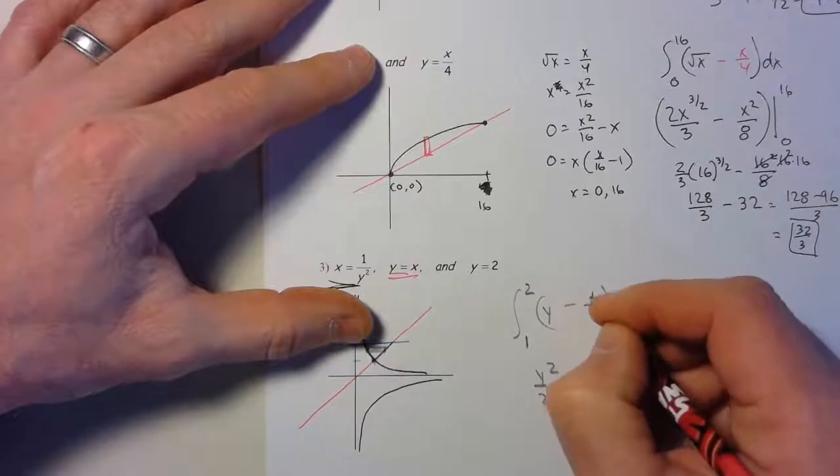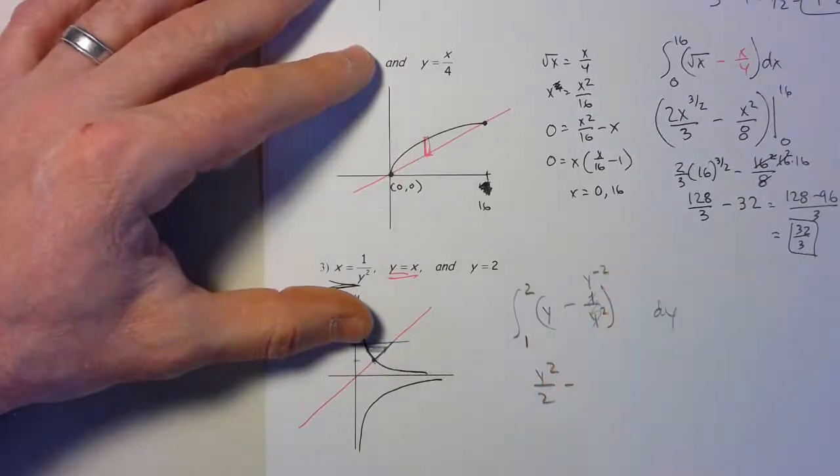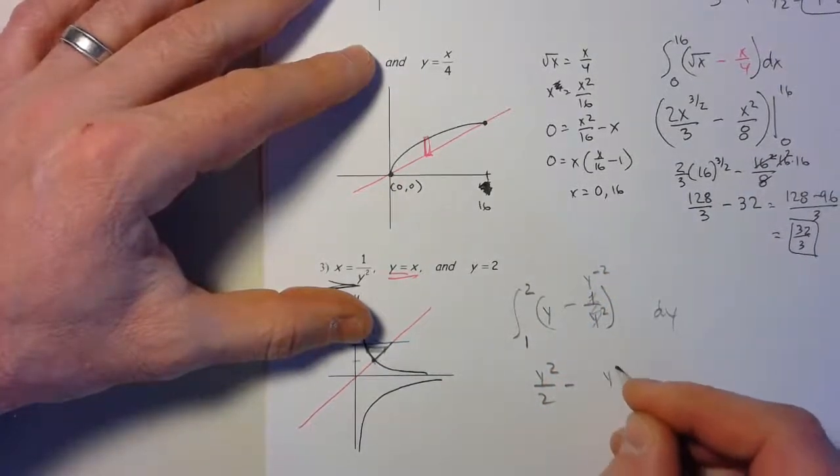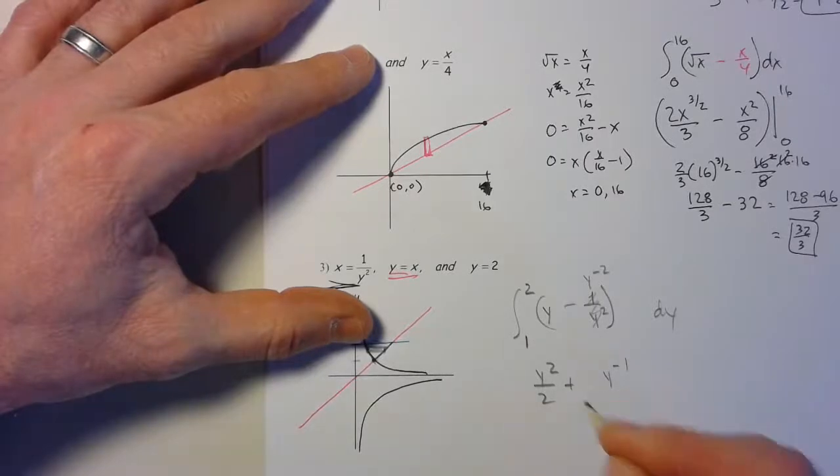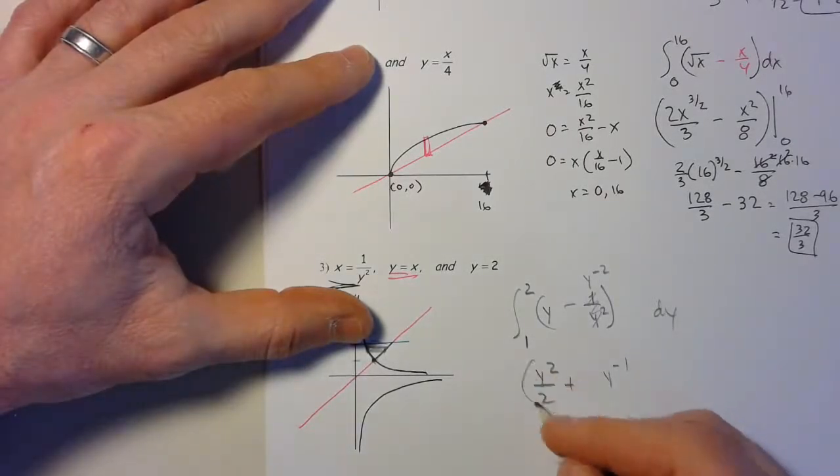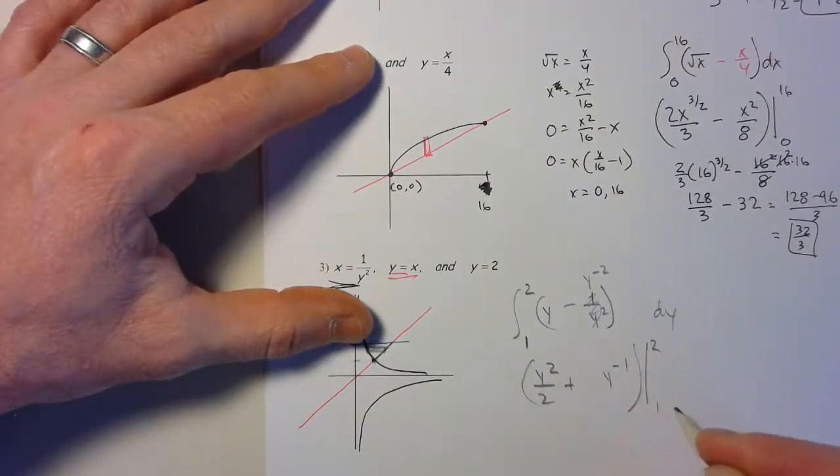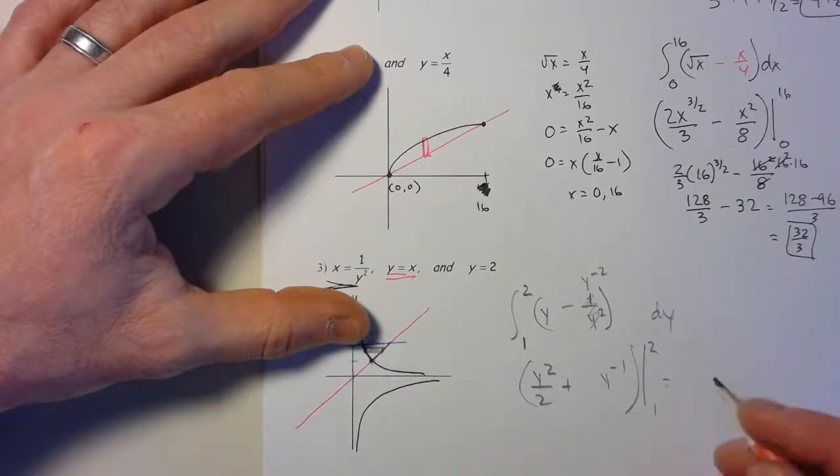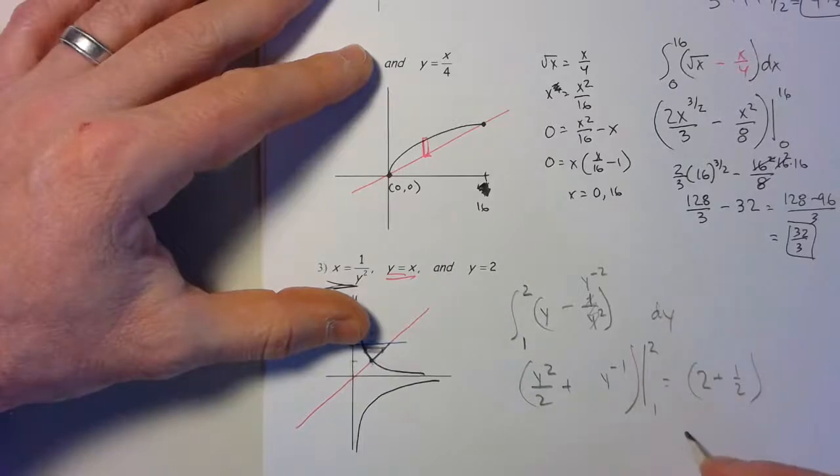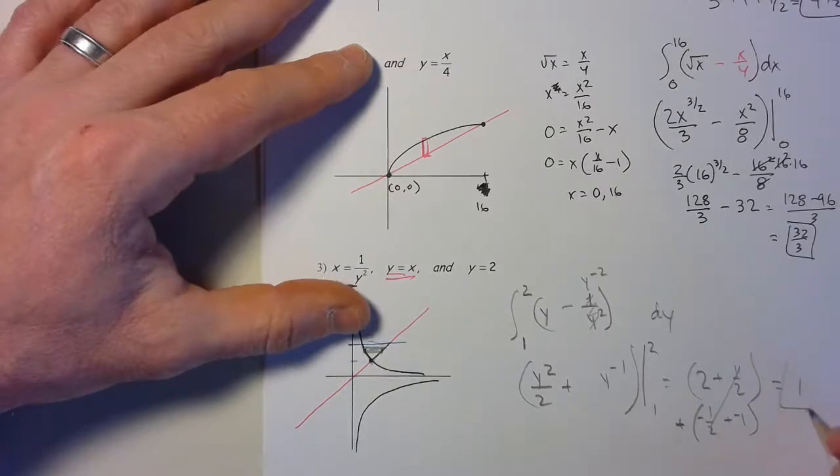Remember that this is y^(-2), so if I add 1 I get y^(-1). That's y²/2 - 1/y from 1/2 to 2. Plug it in: 2 + 1/2 minus 1/2 + 1. Subtracting those, that cancels, so I'm just left with an area of 1.